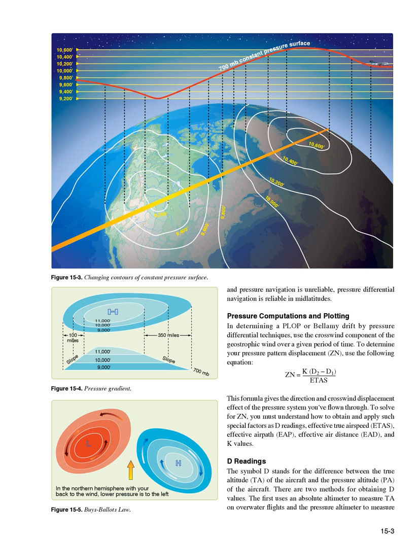Pressure computations and plotting: determining a PLOP or Bellamy drift by pressure differential techniques uses the crosswind component of the geostrophic wind over a given period of time. To determine your pressure pattern displacement (Zn), use the following equation: Zn = K(D2-D1)/8. This formula gives the direction and crosswind displacement effect of the pressure system you've flown through. To solve for Zn, you must understand how to obtain and apply special factors such as D readings, effective true airspeed (ETAS), effective airpath (EAP), effective air distance (EAD), and K values.